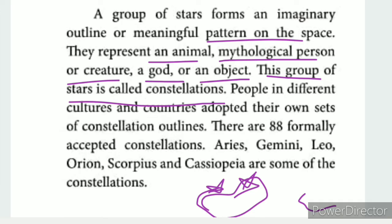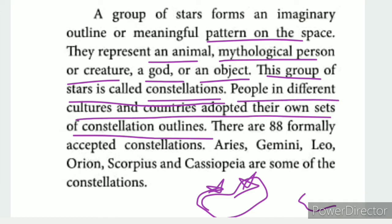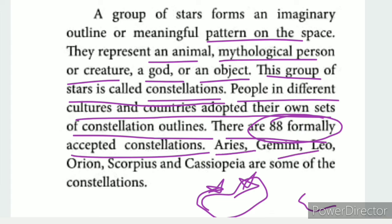Different cultures and countries adopted their own sets of constellation outlines. There are 88 formally accepted constellations. Examples include Aries, Gemini, Leo, Orion, Scorpius, and Cassiopeia.